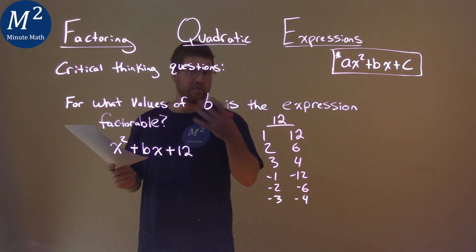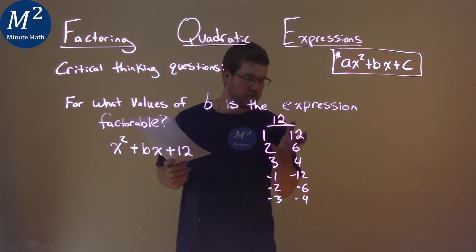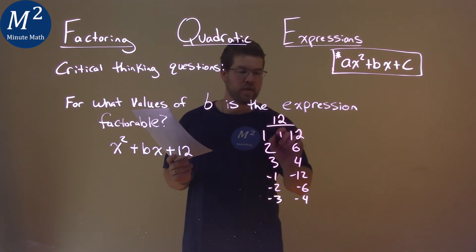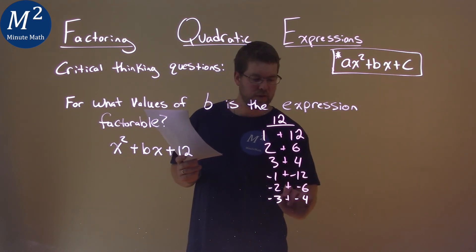But we know it could be, because we defined all the possible values, we have the list of all the numbers that multiply to 12. So we have to add every single one of these pairs.